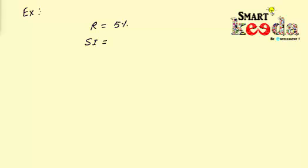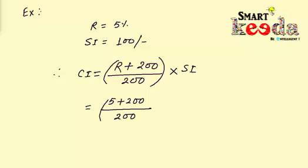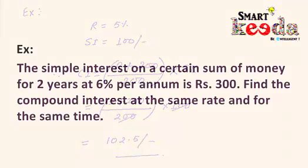So compound interest for two years = (R + 200) / 200 × given SI. This gives us (5 + 200) / 200 × 100, and by solving it we get 102.5 rupees. That's the answer — wasn't it simple?